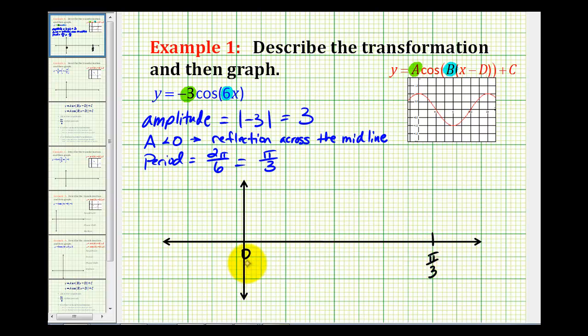It's always helpful to divide this interval into four equal parts, so we'll divide it in half, and then divide it in half again. So half of pi over three would be pi over six, and half of pi over six would be pi over twelve.